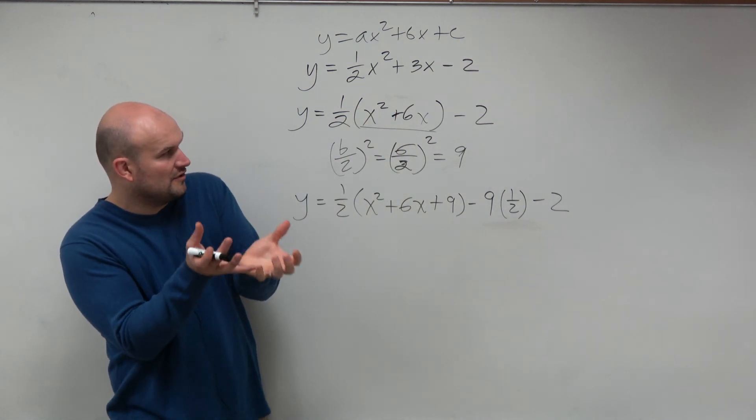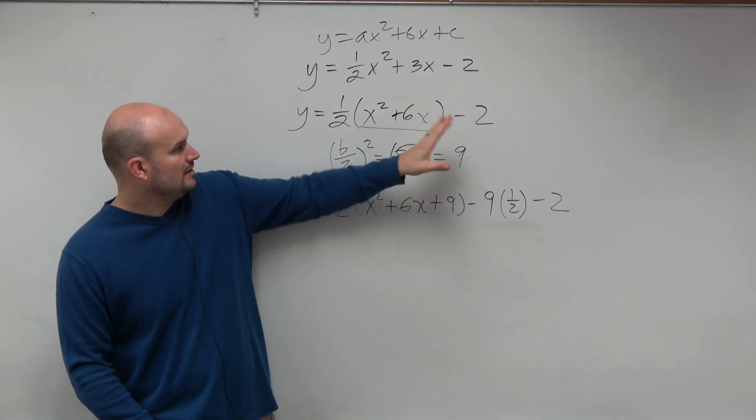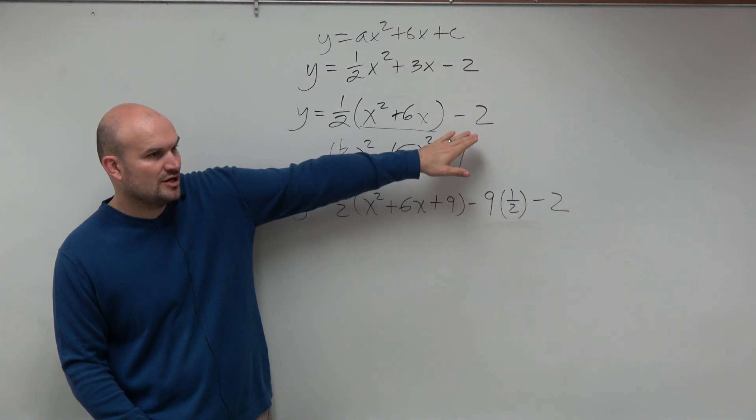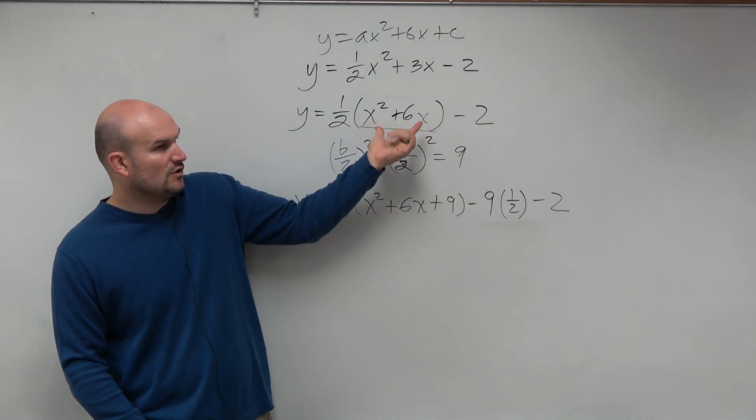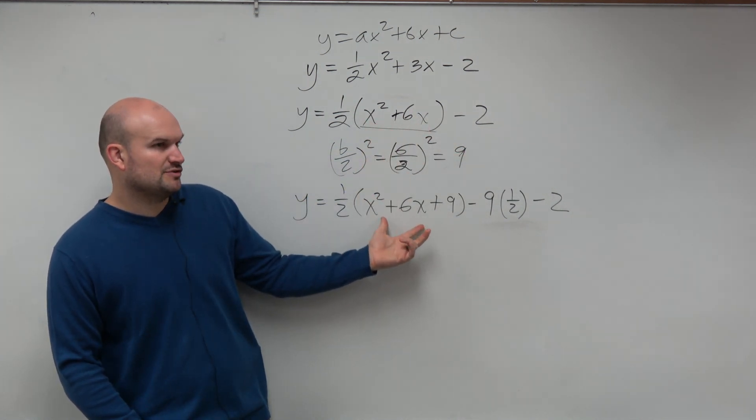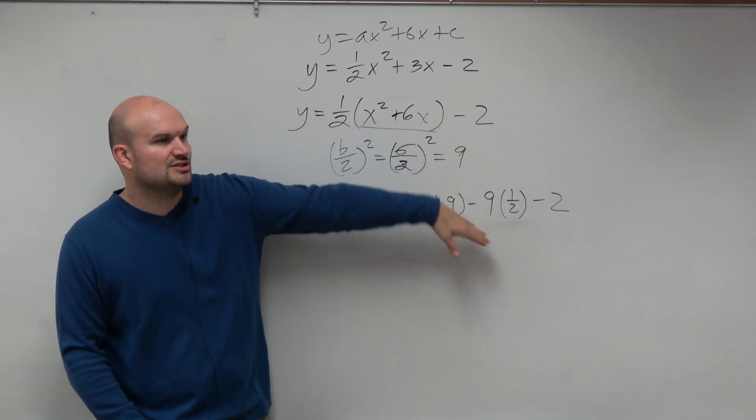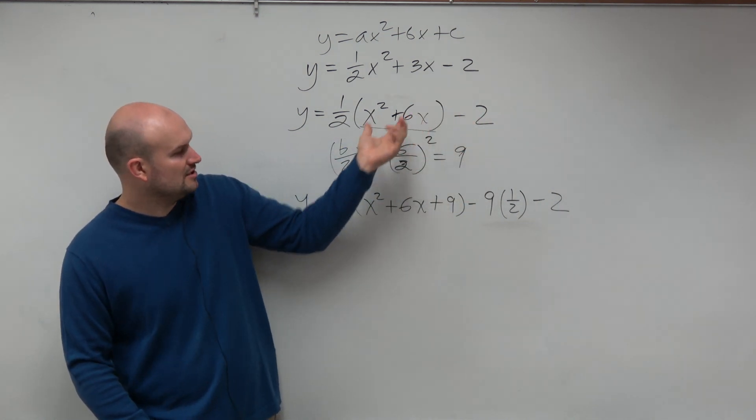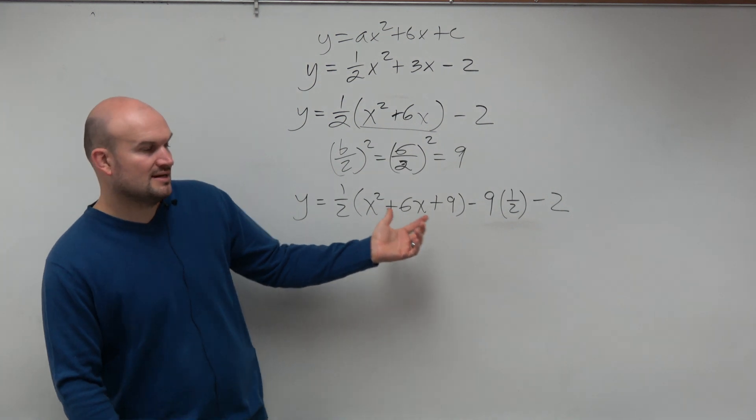So if you just focus on here, because the main important thing I want you to focus on is creating a perfect square trinomial. We don't need this number to create a perfect square trinomial. So let's just focus on these two terms and create a perfect square trinomial. Then we'll worry about the two at the end. But we don't need that to do this.